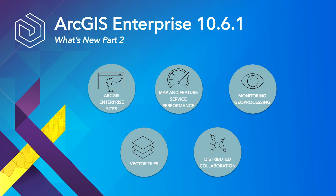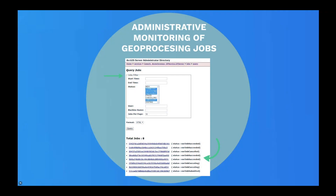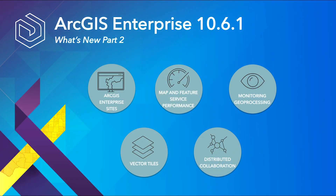New for administrators is an option to see the status of all asynchronous jobs for a geoprocessing service. The service could be caching, publishing, or even running geoanalytics tools. This option is available within REST, where administrators can query based on different parameters, including the status of the job. Here you can see we have queried based on status, and the result returns eight jobs with varying statuses — from submitted, to executing, to succeeded. This gives administrators more fine-grained understanding of job status, both for their own insight and to help communicate status back to members of their organization.